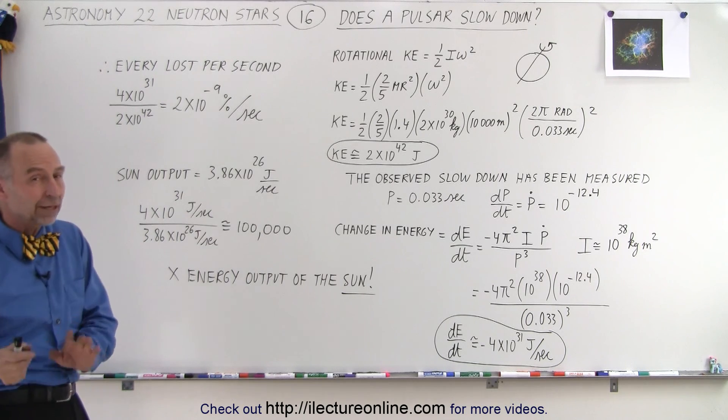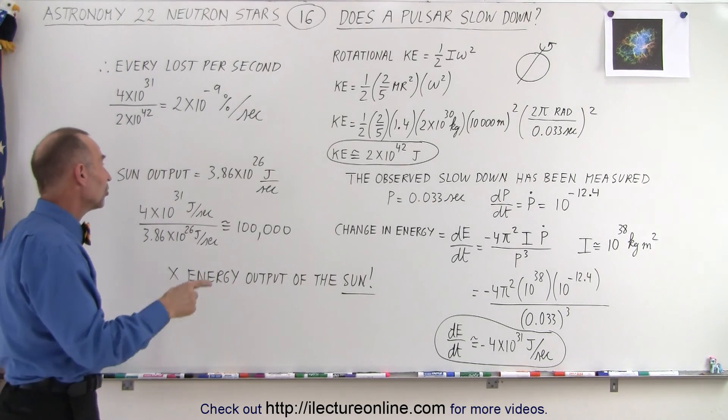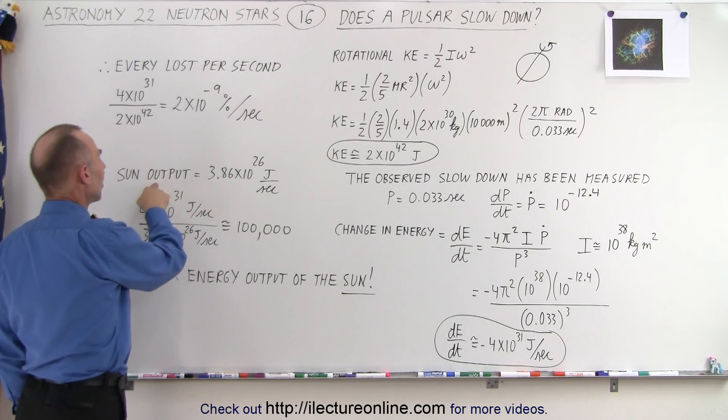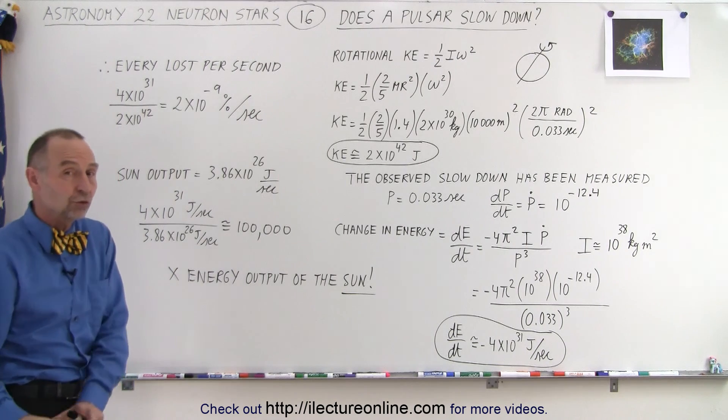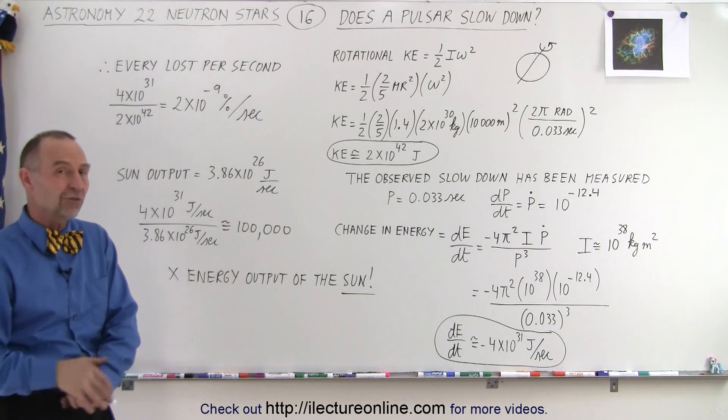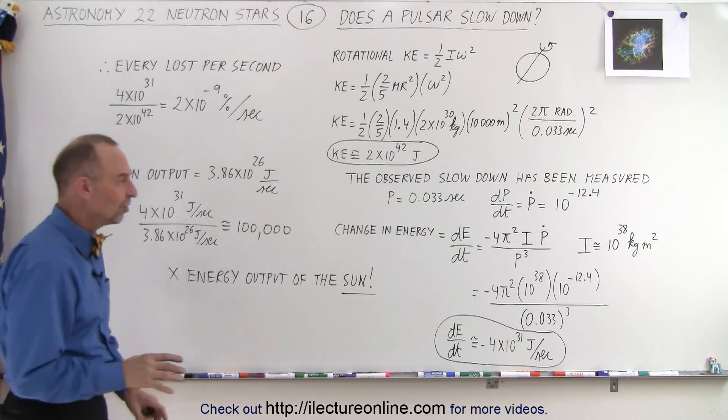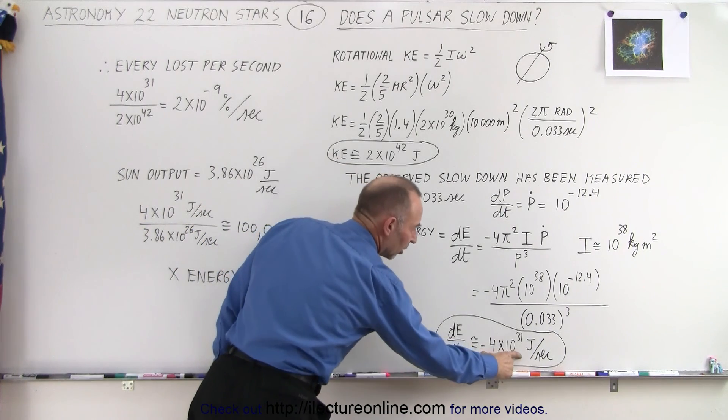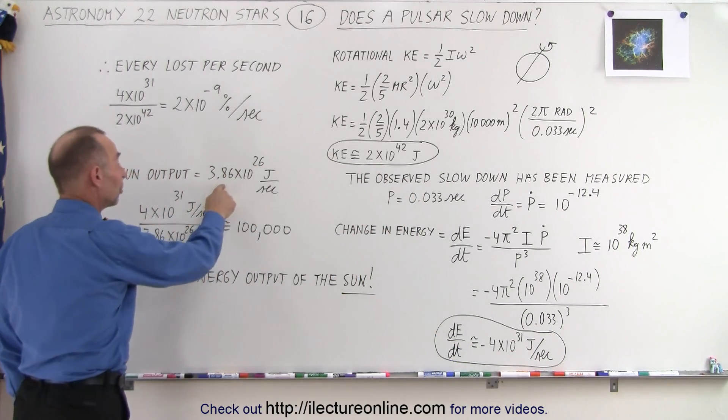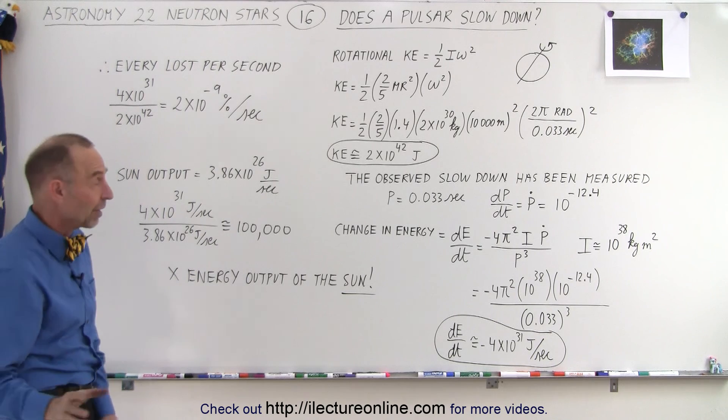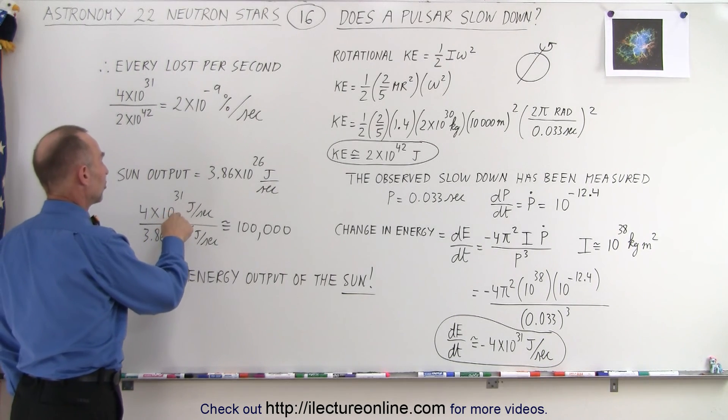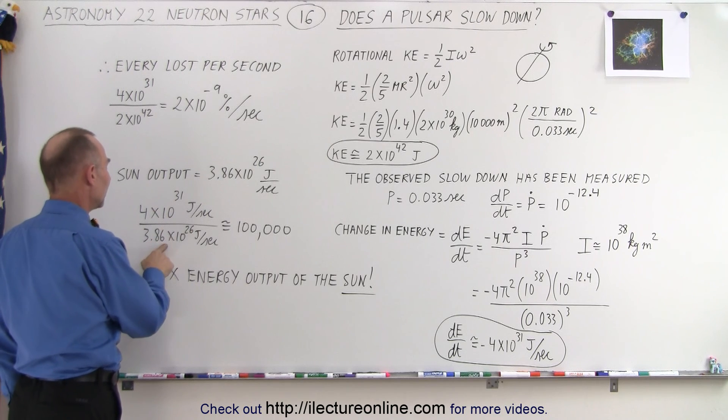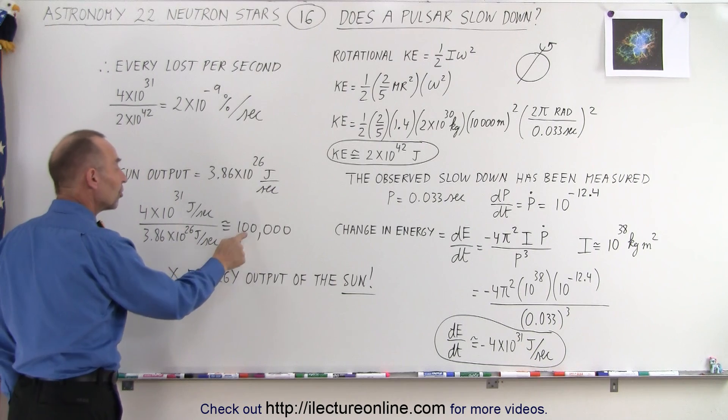Now, if we compare that energy output by how much energy the Sun puts out, notice that the Sun, every second, puts out 3.86 times 10 to the 26 joules. Let's call it about 4 times 10 to the 26 joules. How does the energy expulsion of the pulsar compare to how much energy the Sun puts out? You would be surprised to see that ratio. I divide the amount of energy the pulsar puts out every second by the amount of energy the Sun puts out every second.